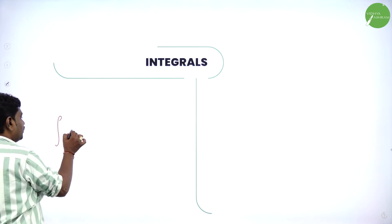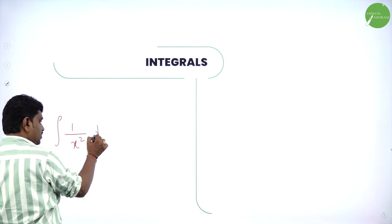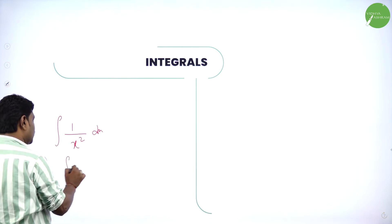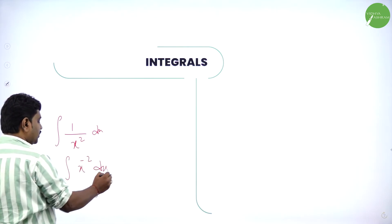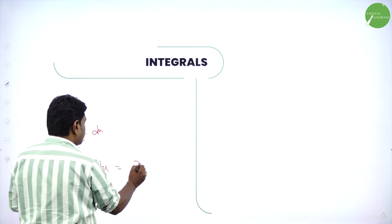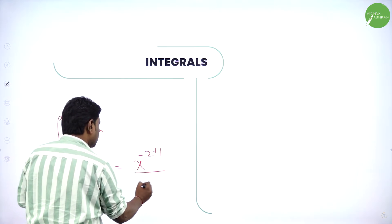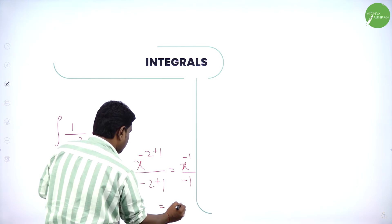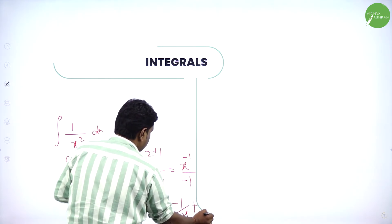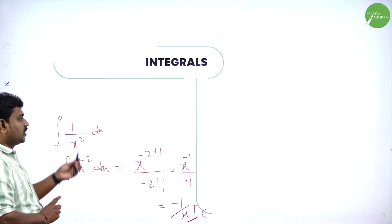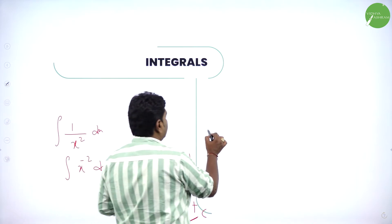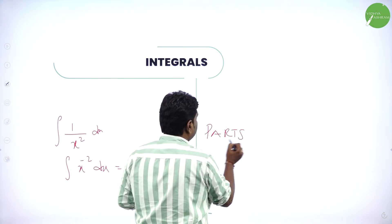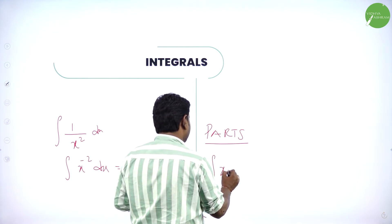Remember, integration of 1/x² dx appears in this problem. There are two methods: you can use the x^n formula — integration of x^n is x^(n+1)/(n+1). So integration of x^(minus 2) gives x^(minus 1)/(minus 1) = minus 1/x. That's what I used. First I applied parts, then used the x^n integration formula.